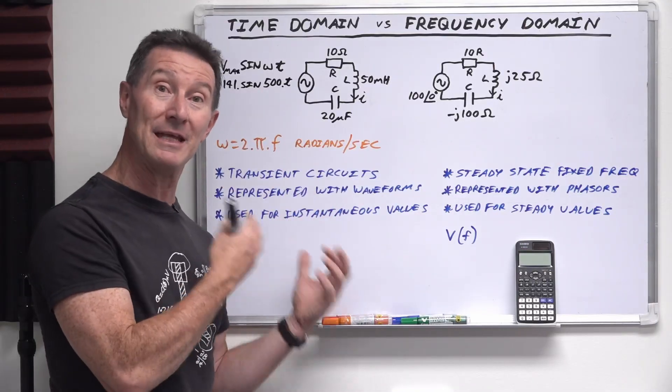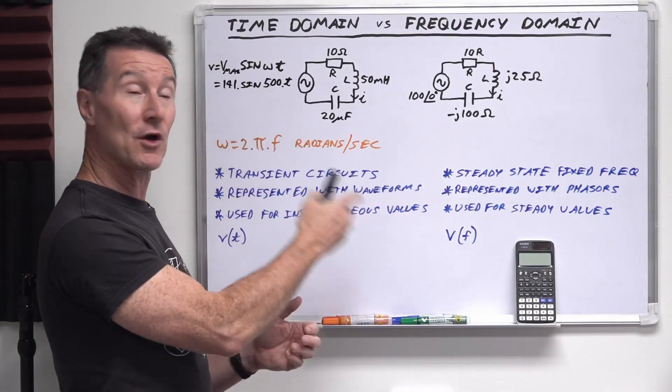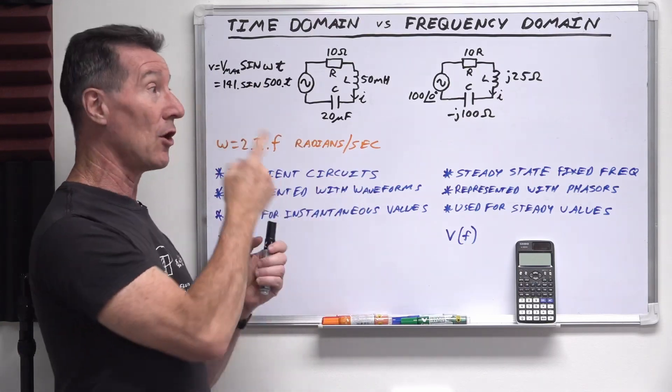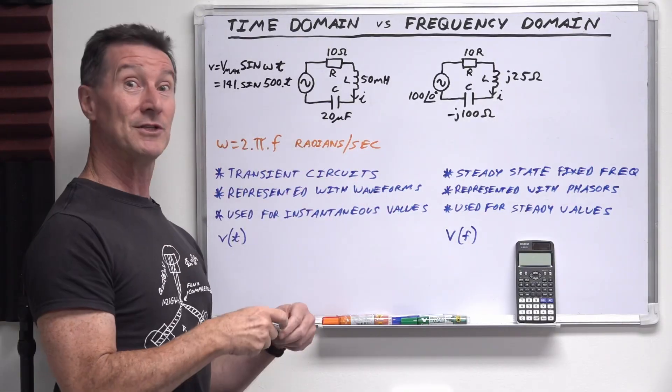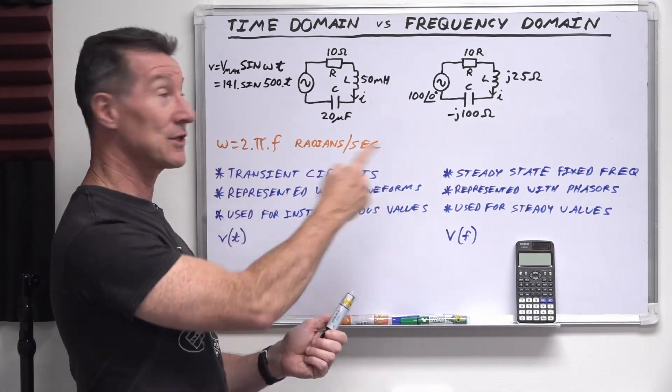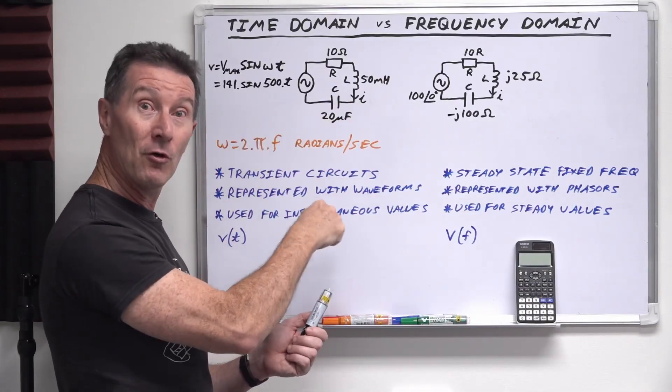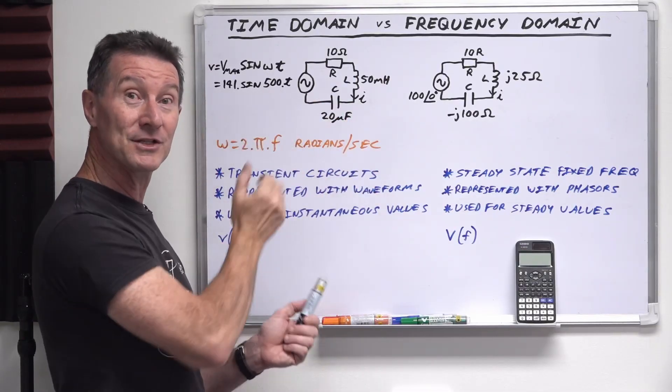You view waveforms on it, you get like an instantaneous value over time on your oscilloscope as that waveform sweeps across. Or at least it used to on your old school analog oscilloscope. That sweep would go across and it would draw the waveform at each moment in time, that instantaneous value.